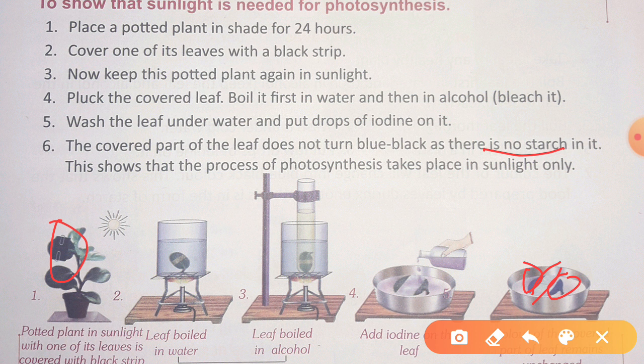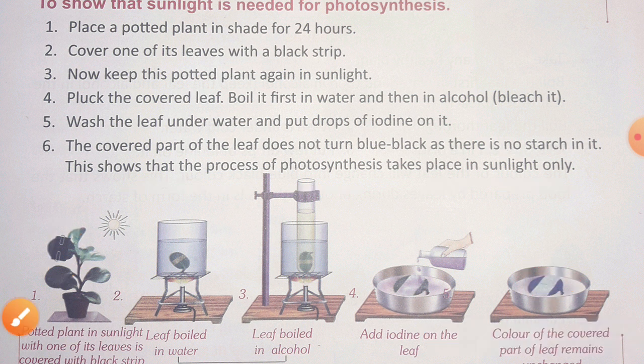The covered part has no starch because sunlight did not reach it, so chlorophyll could not work and no food was prepared there. Only the uncovered parts — where sunlight fell — turned blue and black with iodine, showing starch was formed there. This shows that the process of photosynthesis takes place in sunlight only — wherever sunlight falls, photosynthesis happens and food is made.